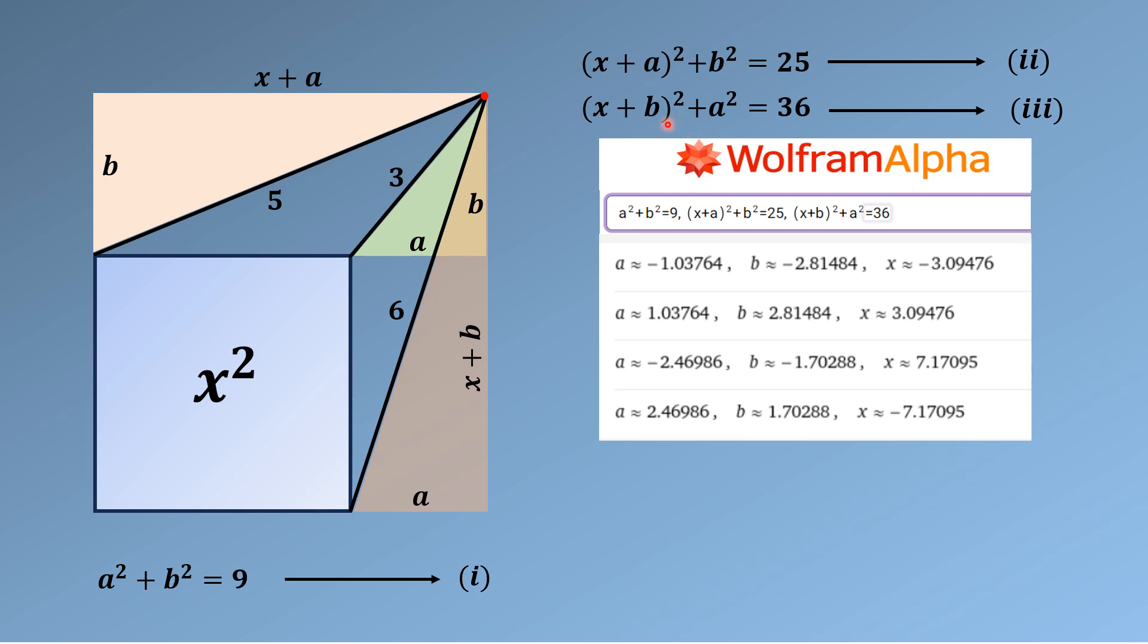We have to note that all three values a, b, and X are lengths, and length can never be negative. So the solution involving any negative value—either a, b, or X—will be rejected, and a solution having all a, b, and X positive is acceptable.